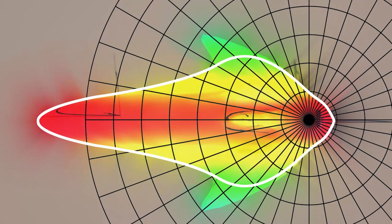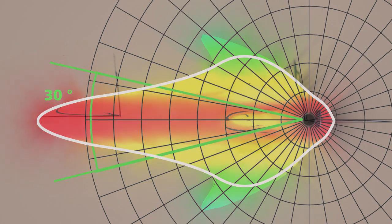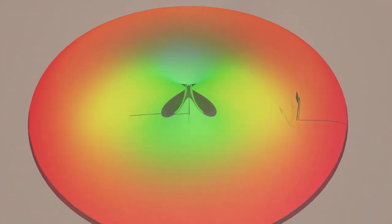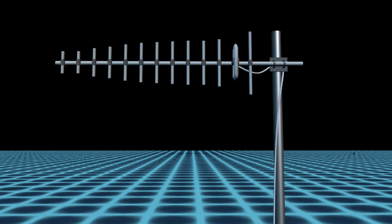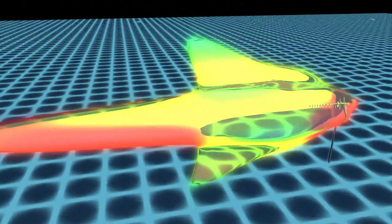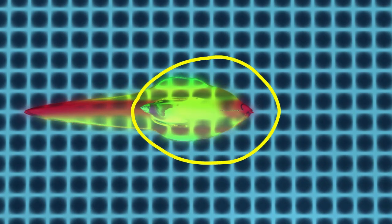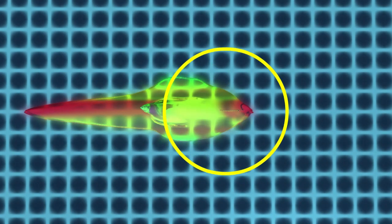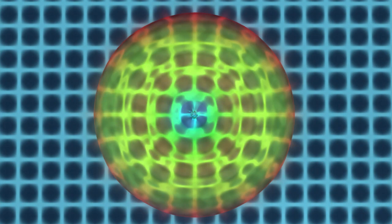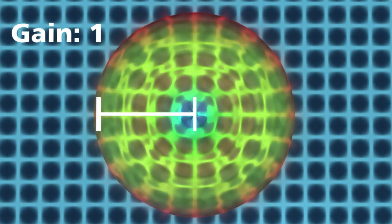Beam width is an angular measurement of how strongly the power is concentrated in a particular direction. It can be broken into two-dimensional slices just like the antenna pattern. The beam width of an omnidirectional pattern is 360 degrees since the power is equal in all directions. Antenna gain is a measure of how strongly an antenna radiates in its direction of maximum radiation intensity compared to how strong the radiation would be if the same power were distributed equally in all directions. An antenna's gain is used to describe the distance to the furthest point on the pattern from the origin. For an omnidirectional pattern, the gain is one, or equivalently zero decibels.